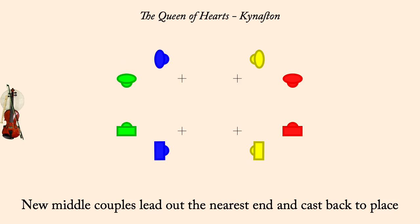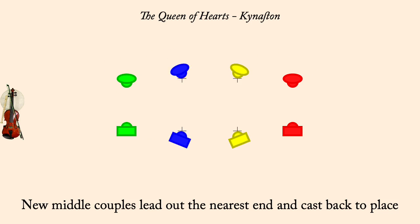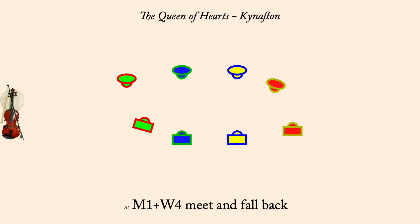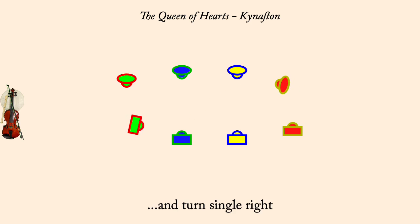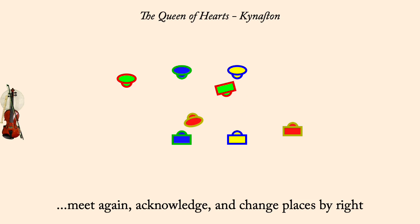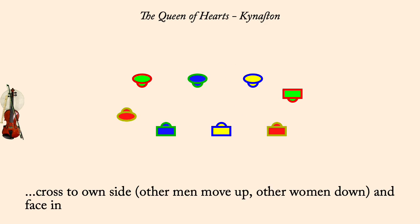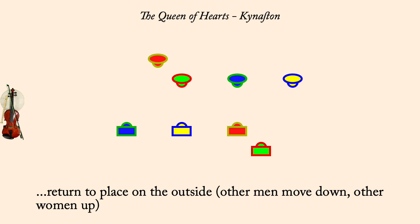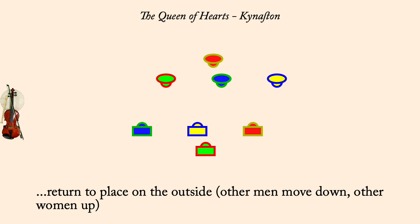Man one, woman four: meet and fall back. And turn single right. Meet again and change by right. Cross to own side, others make room. Fall back. Return to place, others make room.